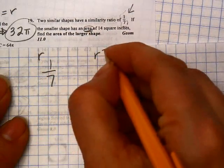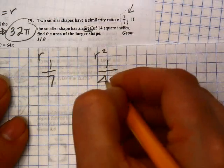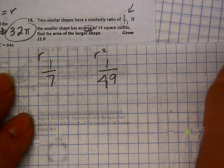If I'm talking about area, I do need to square that, so then the areas would be in a 1 to 49 ratio.